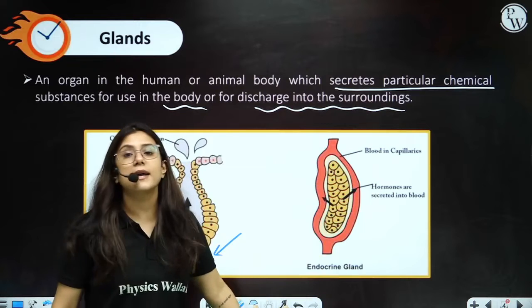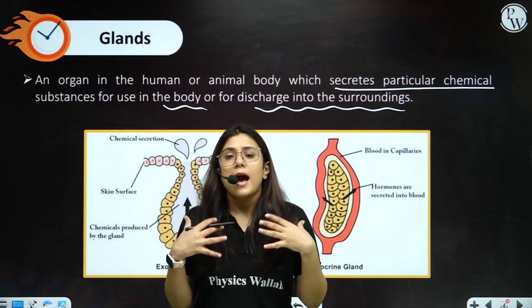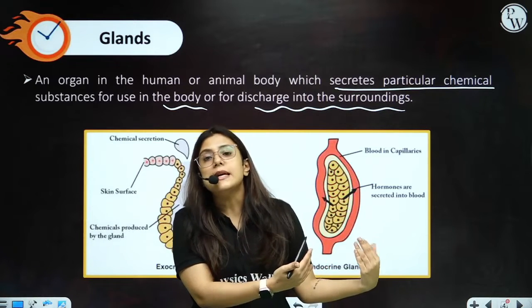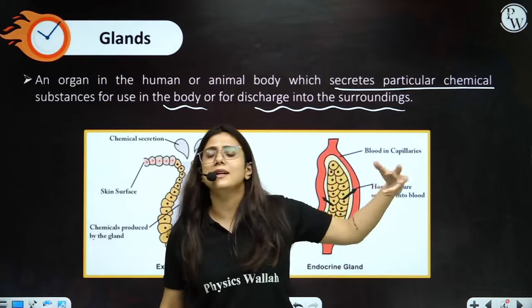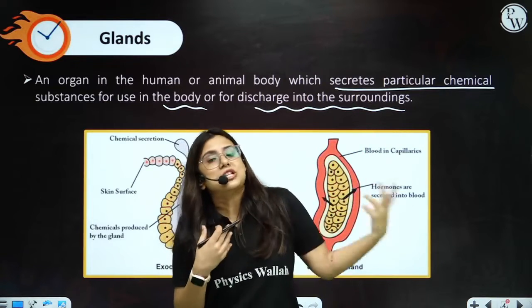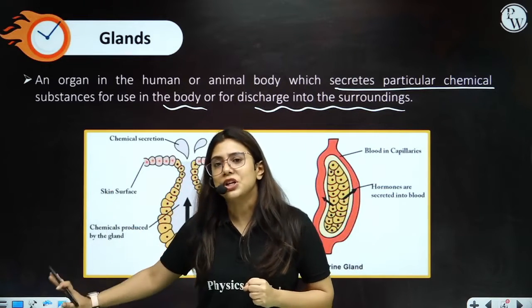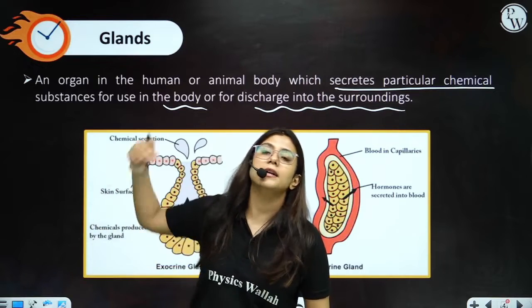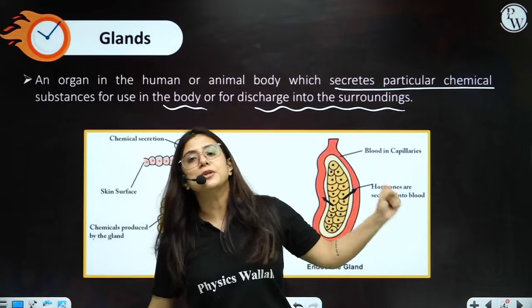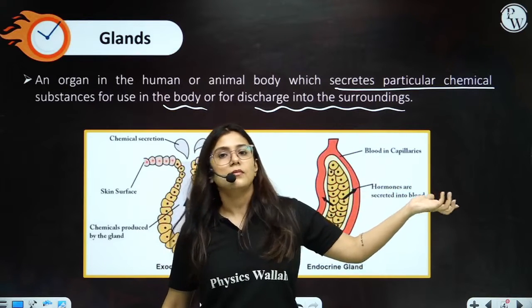When I talk about endocrine glands, endocrine glands add their secretions directly into the bloodstream. Blood will take it wherever it wants to. This is the basic difference: in exocrine glands, their enzymes or chemicals are added inside a duct, but in endocrine glands, whatever they are producing, they are adding it directly inside the blood.